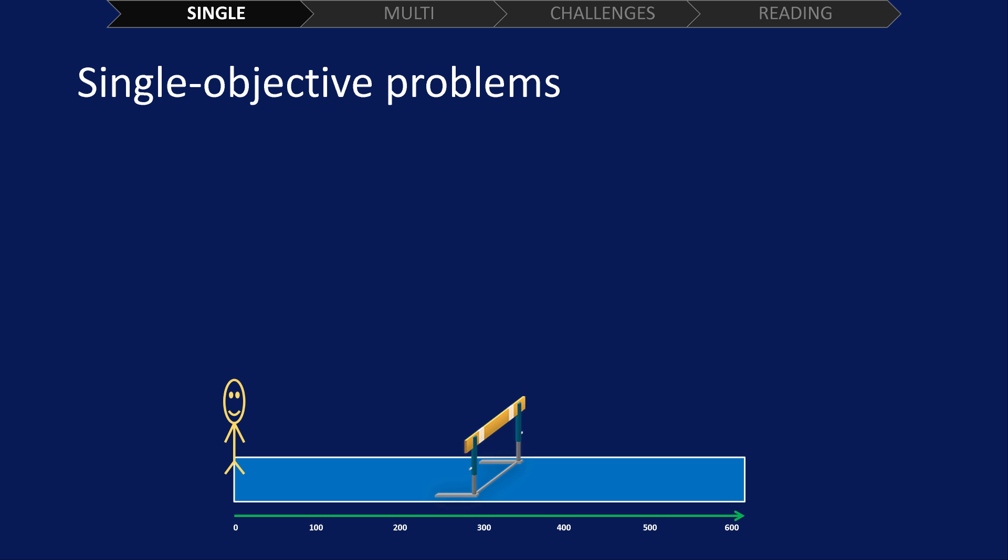In the last video, we went through a single generation of an evolutionary algorithm. This was applied to a problem involving stick figures. As a reminder, our problem was finding a stick figure which could complete the track from beginning to end. This track had a hurdle in the middle, and our stick figure received a fitness score depending on how far it could make it.